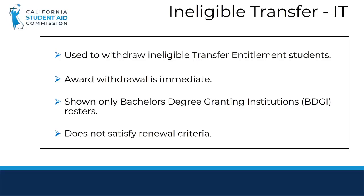IT — Ineligible Transfer. You will use the IT code to withdraw a student that has been identified by Web Grants as a transfer entitlement student but who you have verified is not a transfer entitlement student. The award withdrawal is immediate. Only bachelor degree granting institutions will see this adjustment code on their rosters under the adjustment code drop-down. This code does not satisfy the renewal criteria.